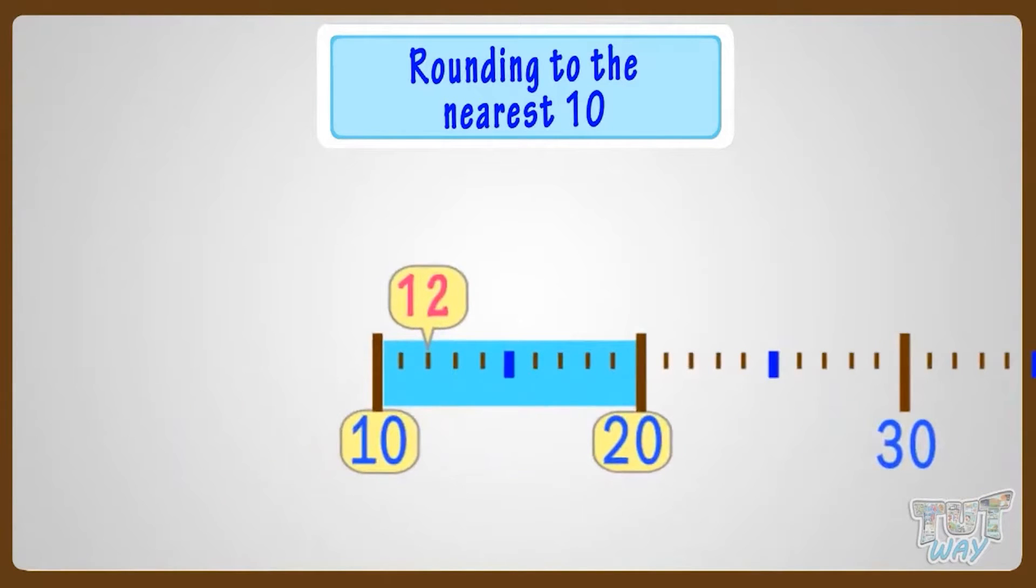Whenever you want to round a number, there are always two options. Either we can round it down to previous 10, that is 10 here,